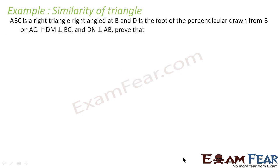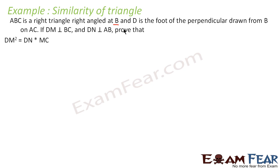Let's take one more example. ABC is a right triangle, right angle at B, and D is the foot of the perpendicular drawn from B on AC. If DM is parallel to BC and perpendicular to BC, and DN is perpendicular to AB, we have to prove that DM square is equal to DN into MC.